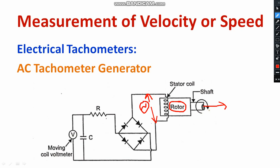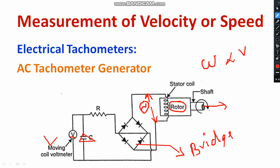The AC voltage is rectified by using a bridge rectifier. However, the output of the bridge rectifier has a certain amount of ripple content. To minimize the ripple, there is a capacitor filter. The DC output is then obtained across a moving coil voltmeter. The speed is directly proportional to the voltage generated across the filtered capacitor. This way, we avoid the usage of commutator and brushes, and smooth operation is guaranteed with the AC tachometer generator.